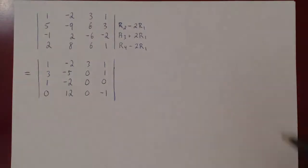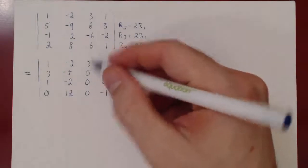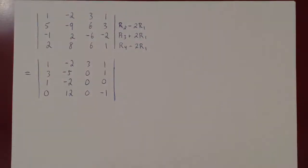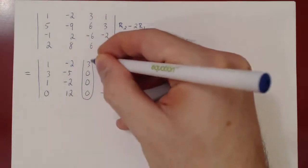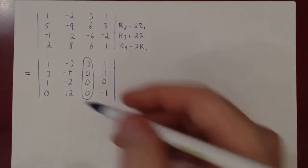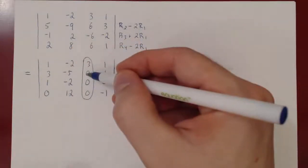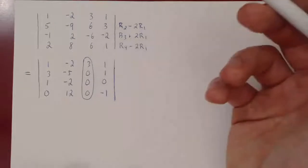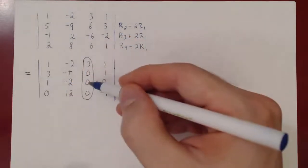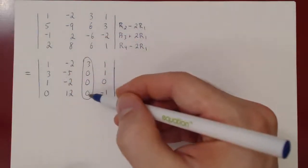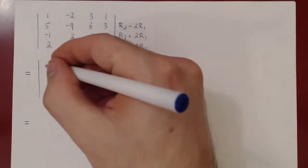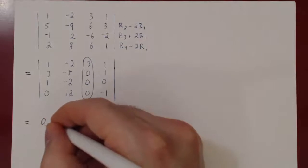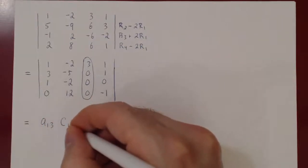We have introduced 3 zeros in the third column, so now we can use cofactor expansion along the third column because it has the most zeros. We don't have to bother with cofactors C23, C33, or C43, because they're each multiplied by 0 and get killed. So all we have is a₁₃ times C₁₃.